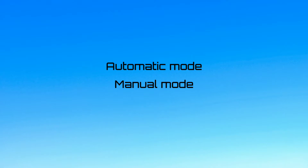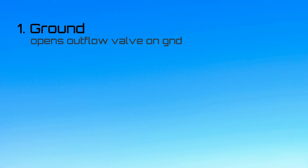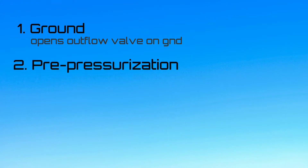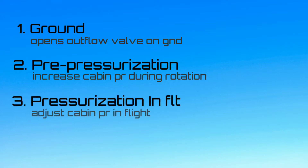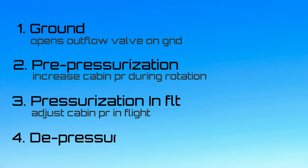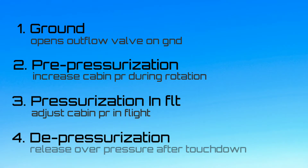The cabin pressurization system has four general functions. Ground function: it fully opens the outflow valve on the ground. Pre-pressurization: during takeoff, it increases cabin pressure to avoid a surge in cabin pressure during rotation. Pressurization in flight: adjusts cabin altitude and rate of change to provide passengers with a comfortable flight. And depressurization: which gradually releases residual cabin overpressure after touchdown.